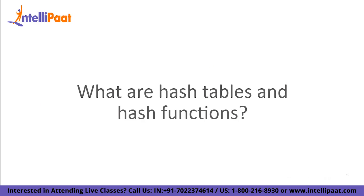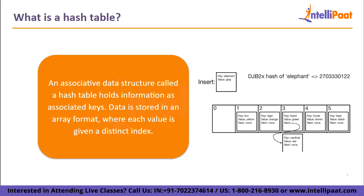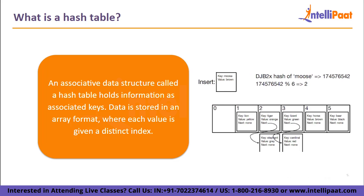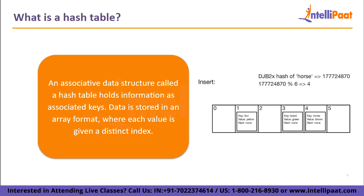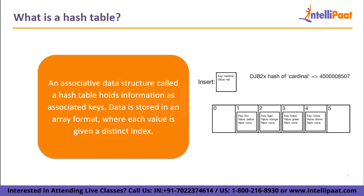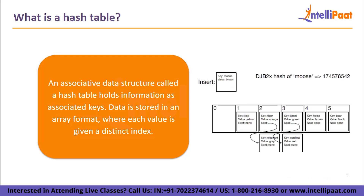Then we move on to what hash tables and hash functions are. A hash table is an associative data structure that holds information as associated keys. Data from hash tables is stored in an array format where each value is given a distinct index. Knowing the needed data's index allows us to rapidly retrieve it. As a result, regardless of data quantity, inserting and searching data is very quick. Elements are kept in an array and produced at an index in a data structure using hashing techniques in a hash table.